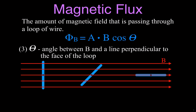The next factor is the angle theta. The angle is between the magnetic field — represented by these red arrows — and a line that's perpendicular to the face of the loop. You're looking at the end of the loop of wire, and the loop goes into the page. We draw a line perpendicular to the face of each loop. The first angle is between the magnetic field and that perpendicular line. Then for the next loop we draw a perpendicular line and measure angle theta. And for the last one, we do the same — the angle between the magnetic field and the line perpendicular to the face of the loop.